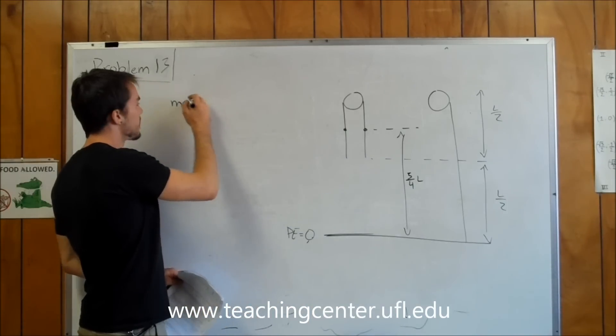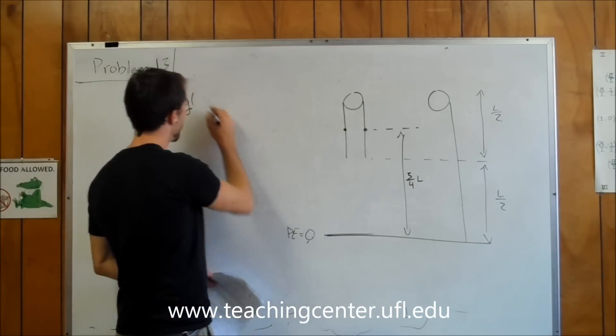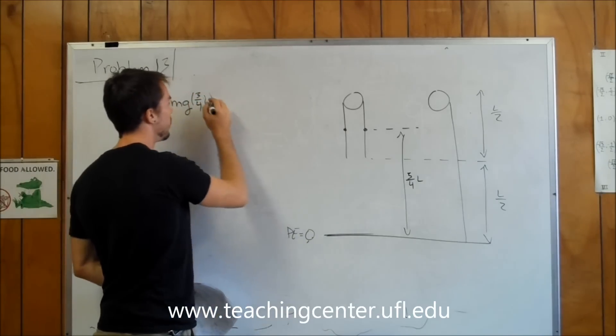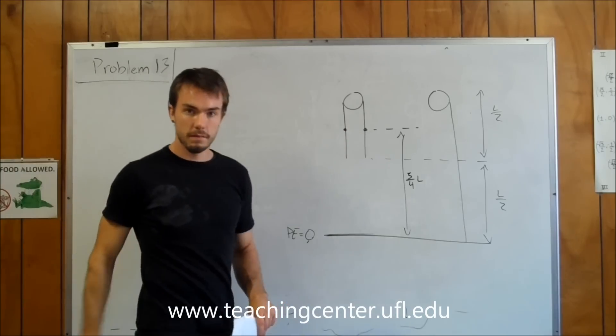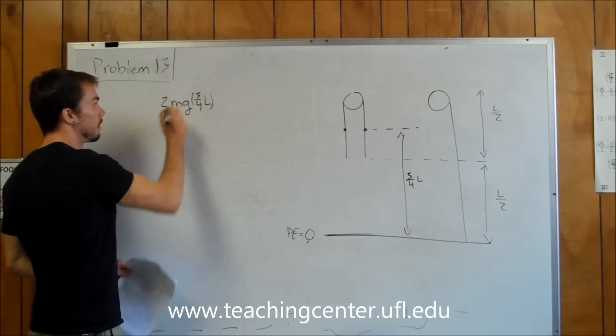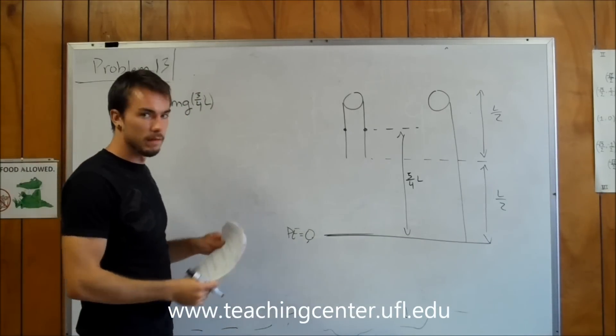So we have mg times 3/4 of L for the one rope. Then we have the exact same thing for the other rope, so I'm just going to multiply that by 2. If you just add them together, it ends up being the exact same thing.